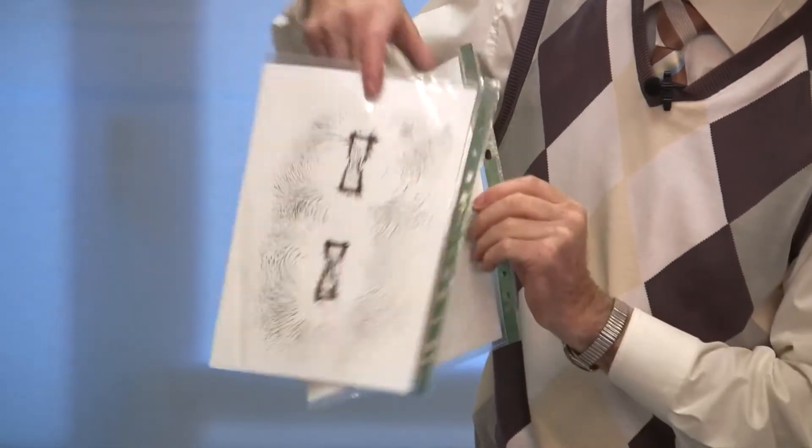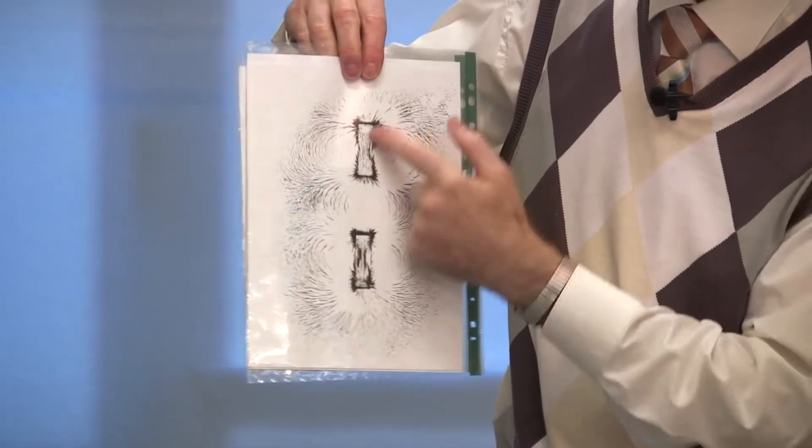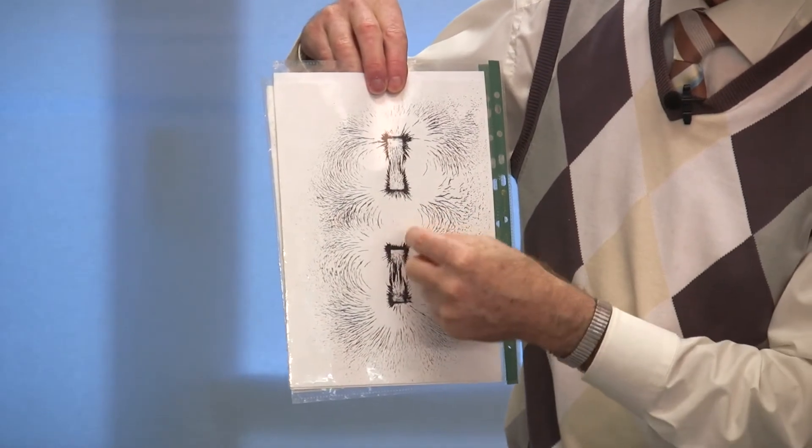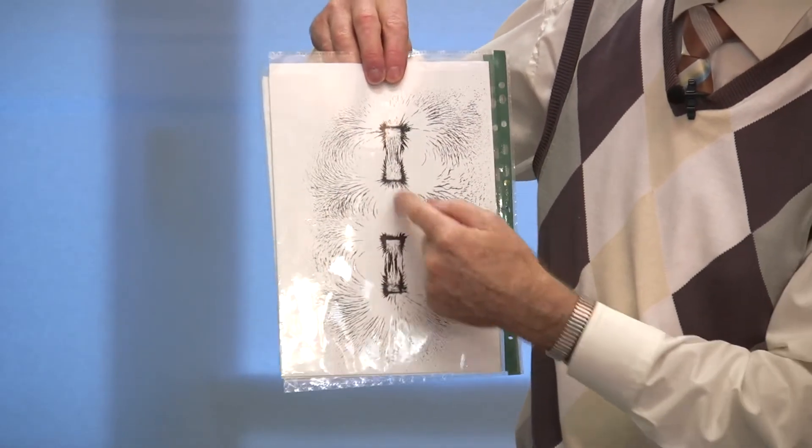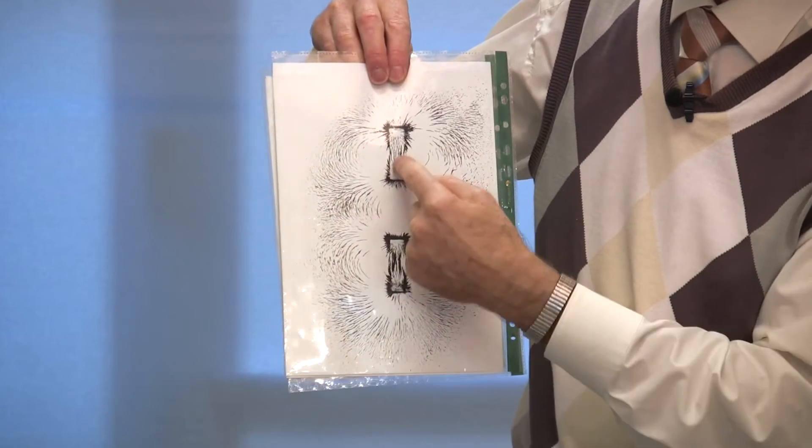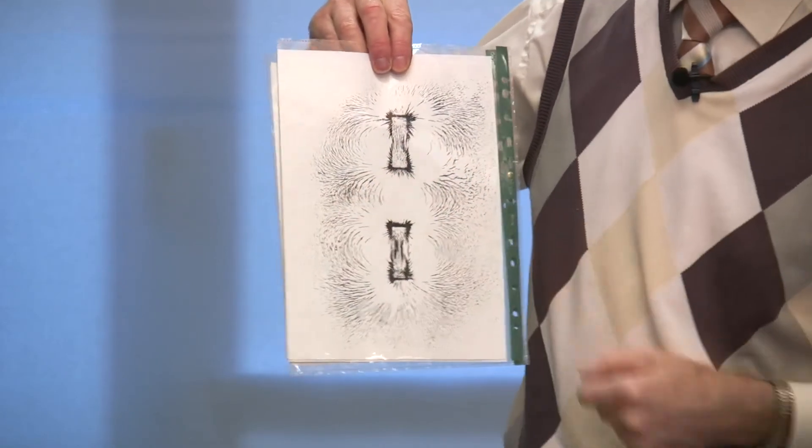In this one, the two magnets are facing the same direction, so the field lines in the middle are vertical.